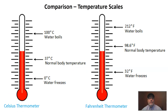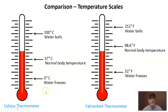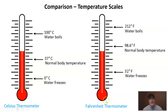The first thing I want us to do is take a quick glance at the two major temperature scales that we're going to find in use. On this side, we have what's called the Celsius temperature scale. This is the temperature scale used by most of the world and almost exclusively by scientists. On this side, we have the Fahrenheit temperature scale, which is really only used in the United States.